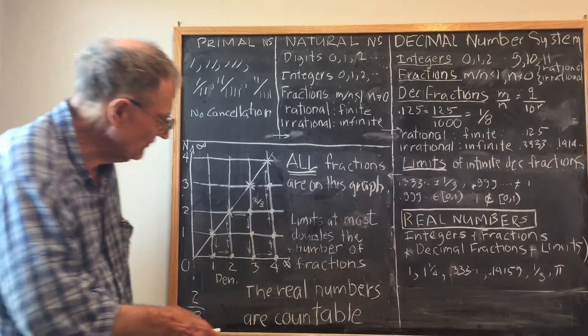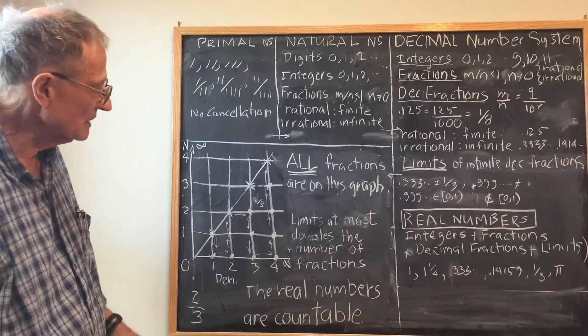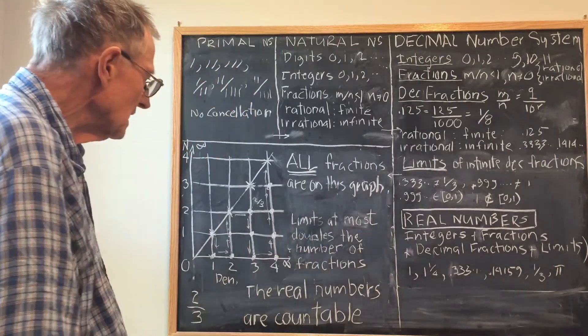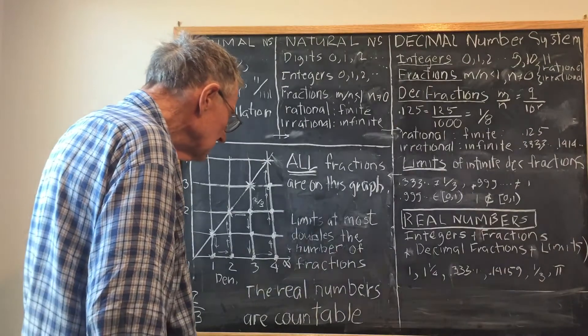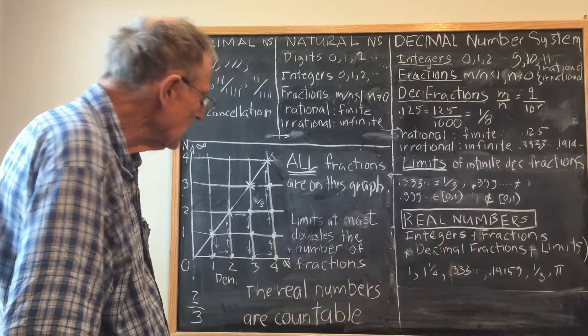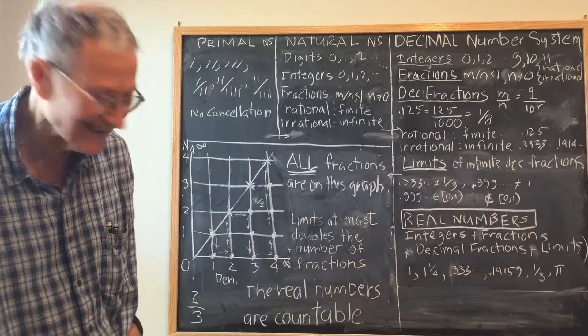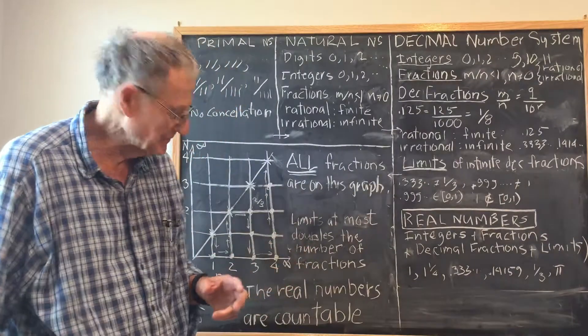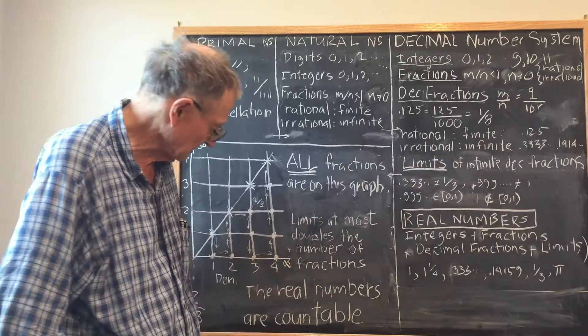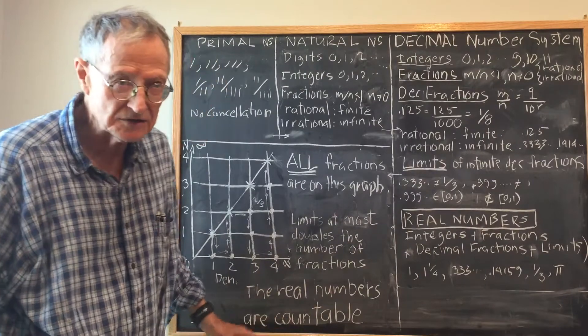But in addition, we have limits of irrational fractions to count. Limits at most doubles the number of fractions. Therefore, the final conclusion is, the real numbers are countable.